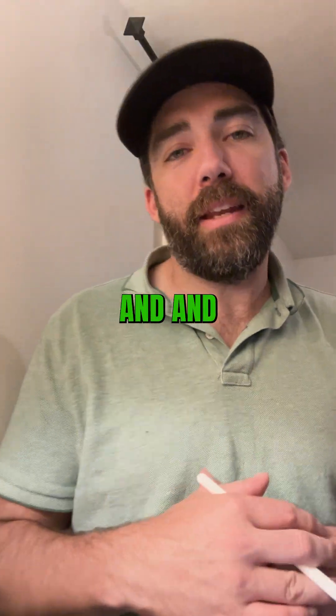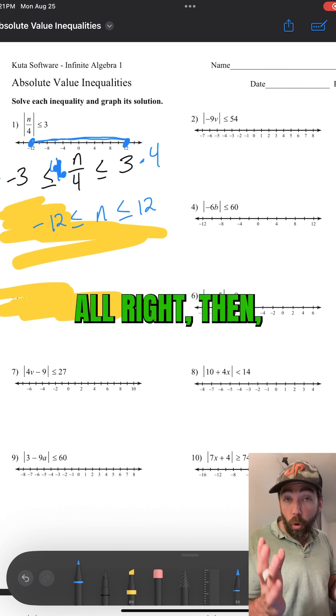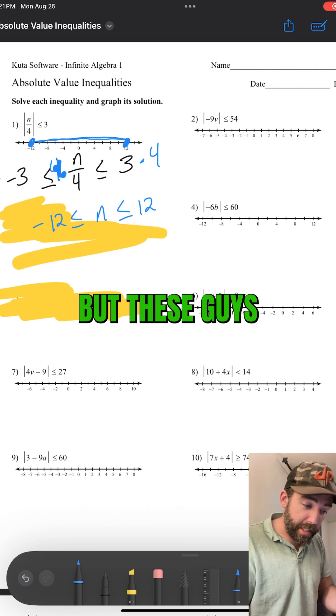Why is less than and and greater than or? Well, if it was or, right, then they would not be coming together. They would be going apart. These guys are coming together.